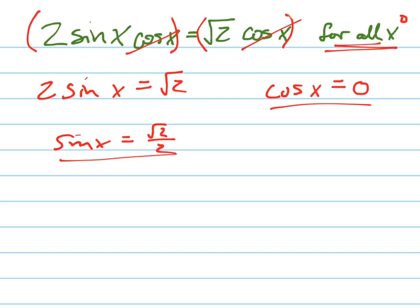The sine x, which is your y-coordinate, is root two over two at 45 degrees plus or minus 360 degrees, and in the second quadrant, it's 135 degrees plus or minus 360 degrees.